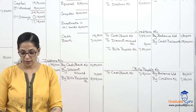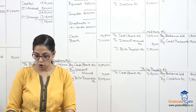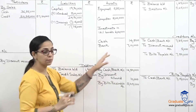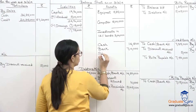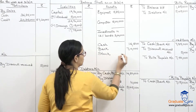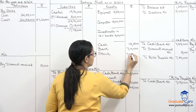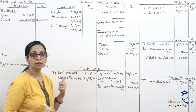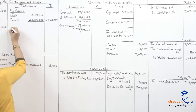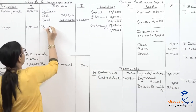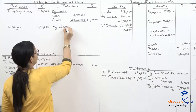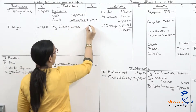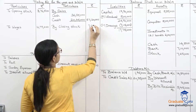Closing stock of seven lakh sixty five thousand has two effects: one goes to the balance sheet as stock, and the other goes to the trading account on the credit side as 'by closing stock' seven lakh sixty five thousand.